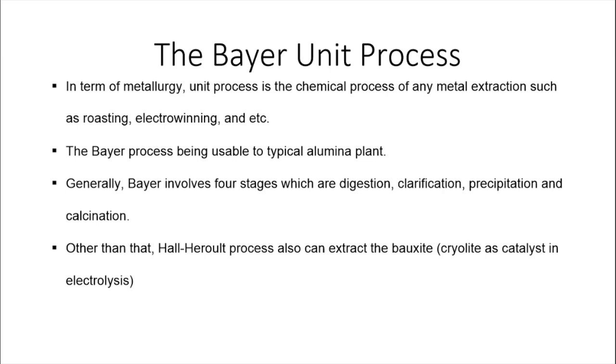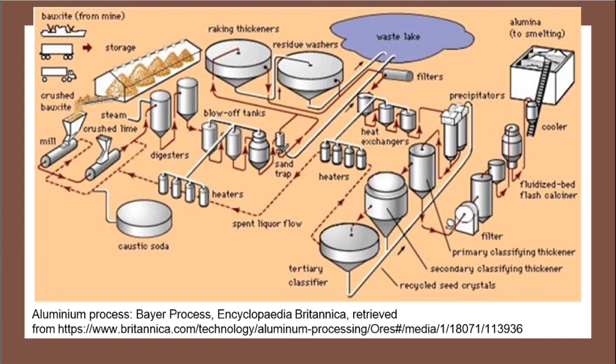Next, the unit process of the Bayer process. It is defined as the chemical process of any metal extraction such as roasting, electrowinning, smelting, etc. This process is commonly used in alumina plants and there are four stages: digestion, clarification, precipitation, and calcination. Besides the Bayer process, the Hall-Héroult process can further extract alumina to aluminum. This is the full diagram of an alumina plant retrieved from Encyclopedia Britannica. As you can see here, the arrows show the direction from one stage to the next gradually.